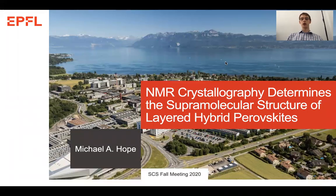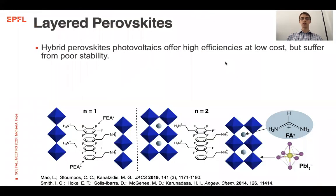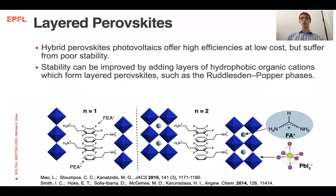Today I'm going to tell you how we use NMR crystallography to determine the supramolecular structure of a layered hybrid perovskite. Hybrid perovskite photovoltaics offer high efficiencies at low cost but they suffer from poor stability. One of the ways of improving stability is to add layers of hydrophobic organic cations which then form layered perovskites, such as the Ruddlesden-Popper phases.